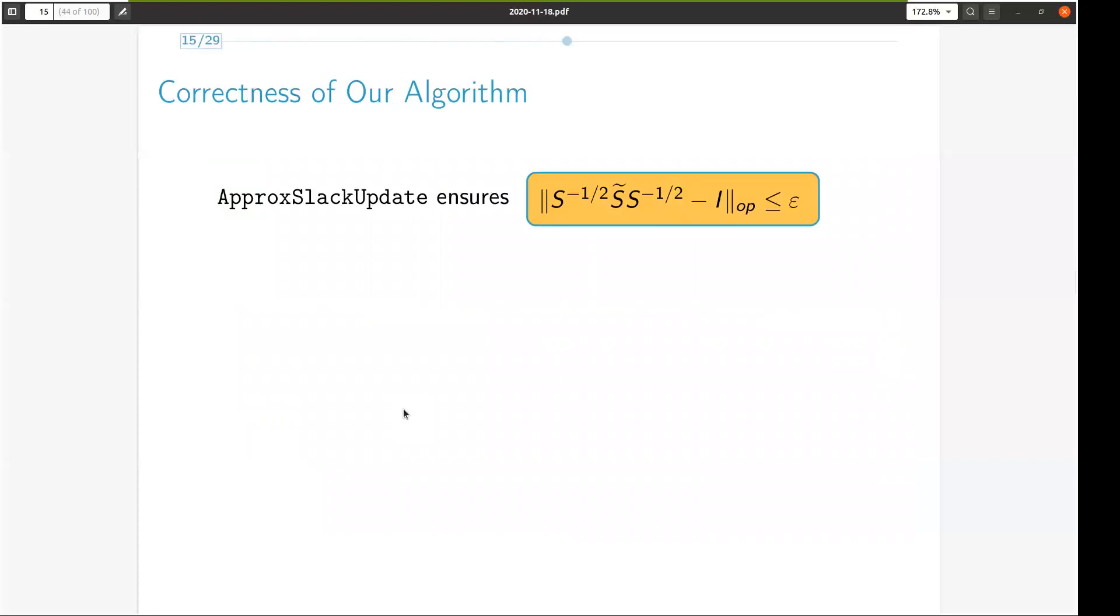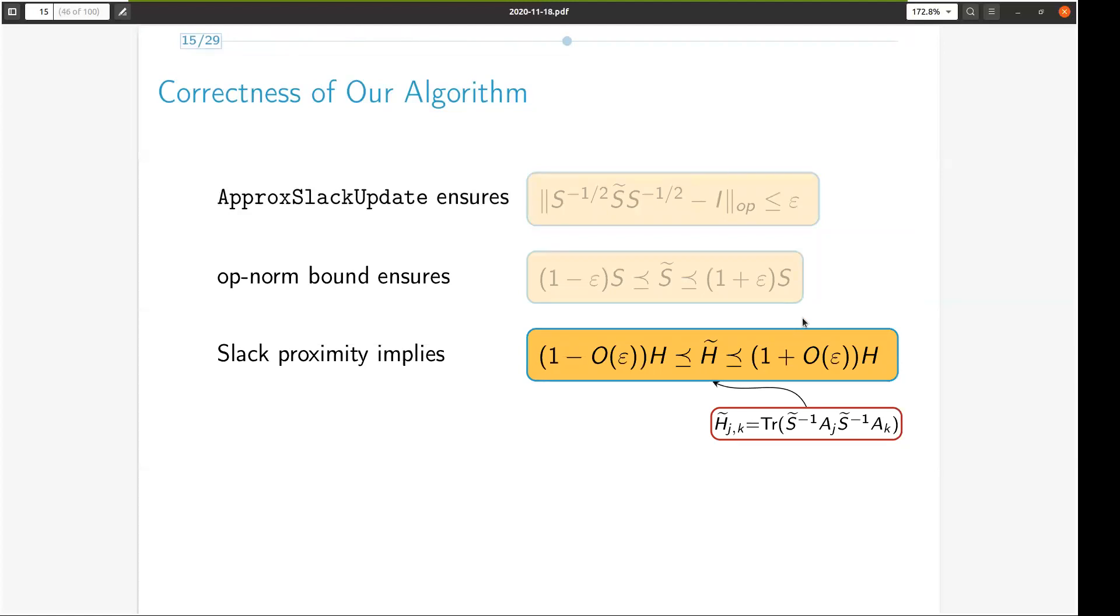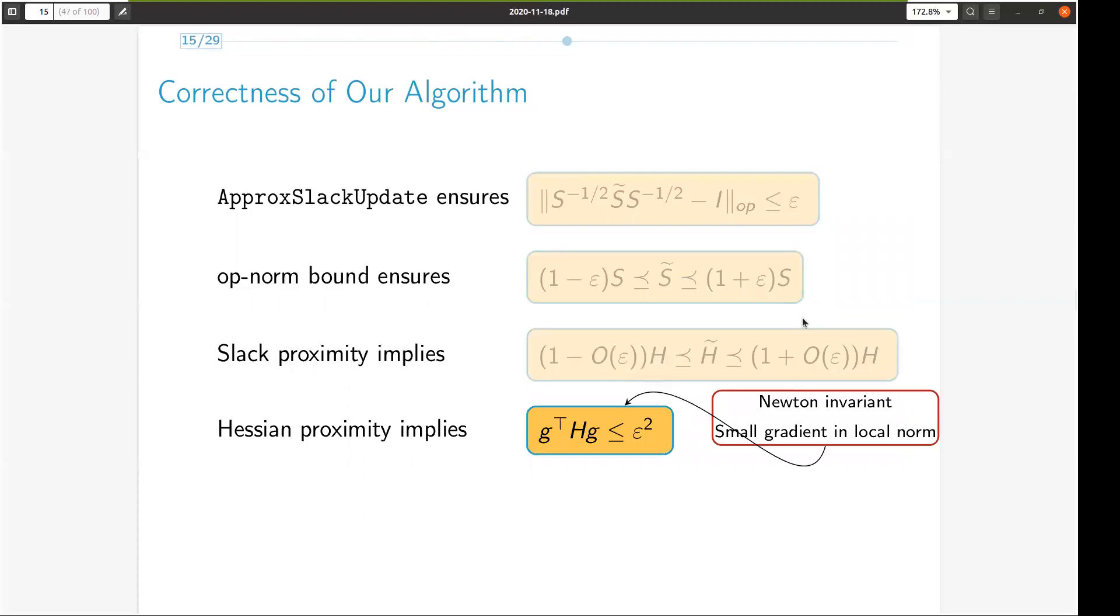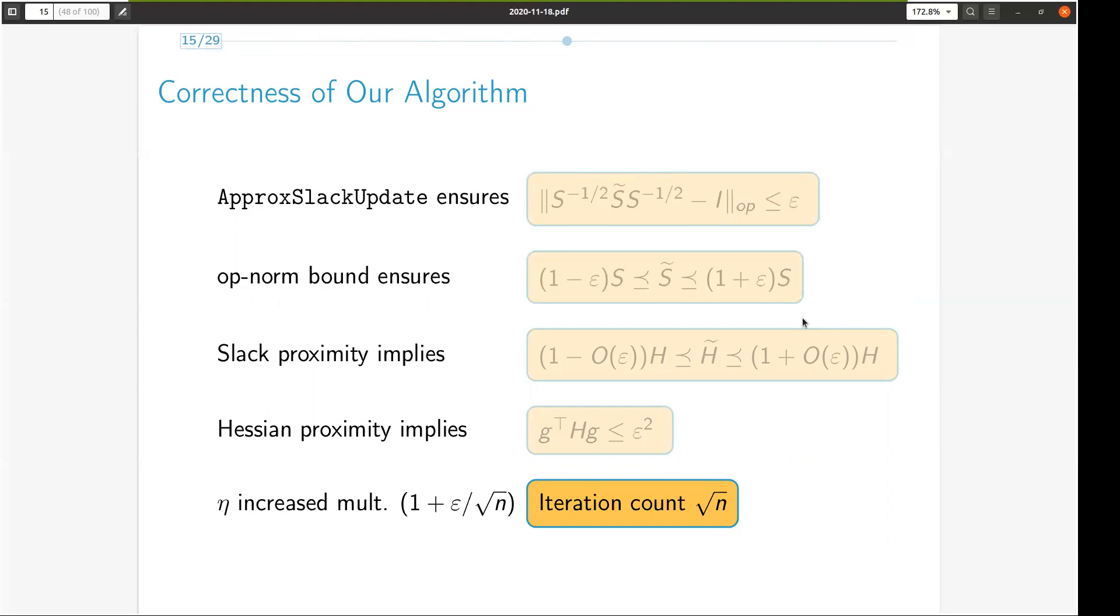Despite using an approximate slack matrix instead of the true slack matrix, we show that we give a proof sketch of the fact that our algorithm converges in square root n iterations just like standard interior point method. The way this works is because of this operator norm guarantee from the function approx slack update. This ensures that the true and approximate slack matrices are close in some sense. And by the definition of operator norm, it further implies that they are close spectrally. We can then further show that the true and approximate Hessians are also spectrally close. And because of this result, we can show that despite using approximate Hessians, our algorithm has the Newton invariant that the gradient measured in the local norm is small in each iteration. This fact combined with the rate of update of eta ensures an iteration complexity of square root n.